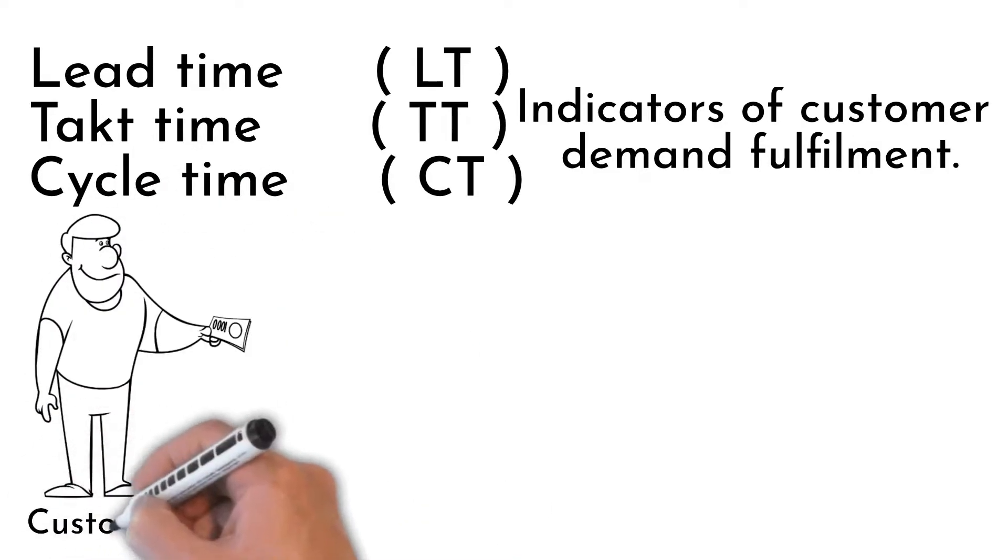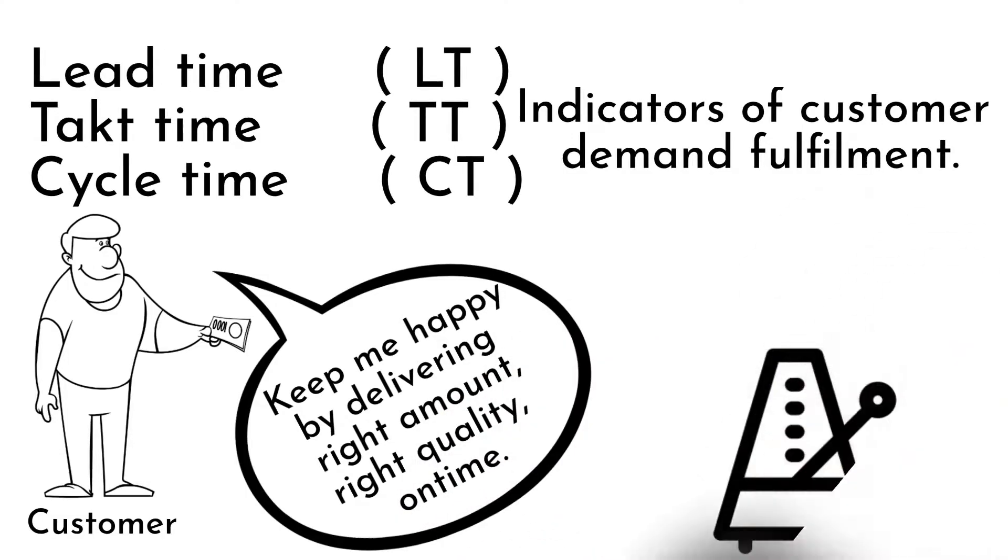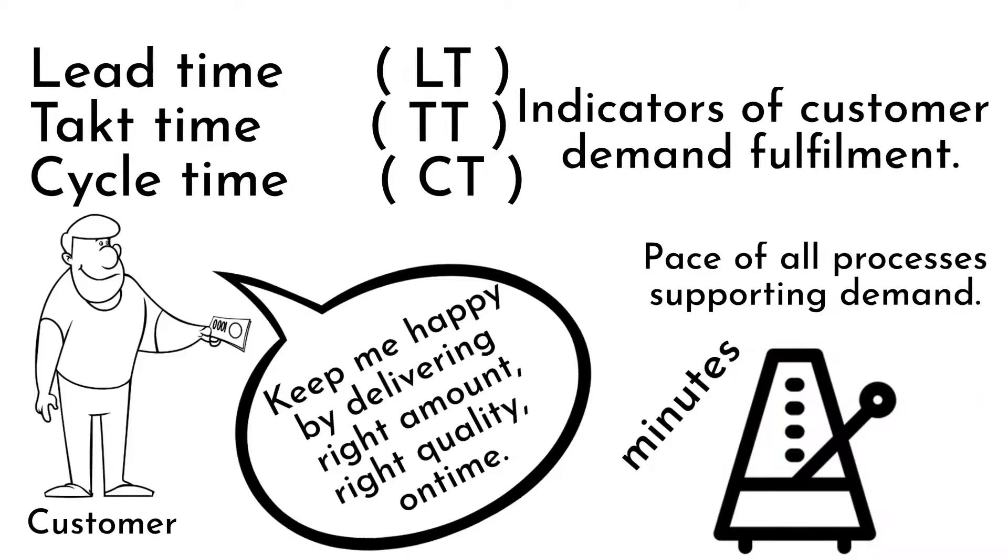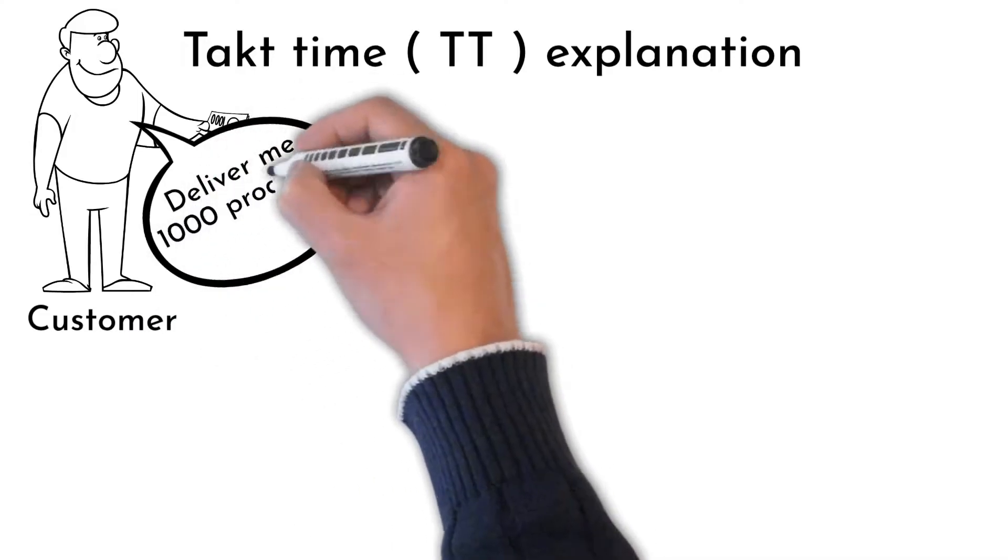Everything starts at the customer requirement. Customer demand sets our takt time. Takt time is the average pace that a process must work to make customer happy. It is calculated in minutes or seconds. Example: customer requires 1000 of our products per month.